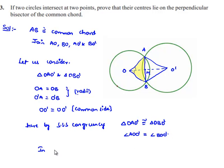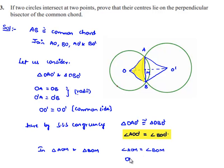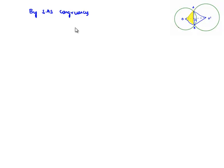Now let us consider another pair of triangles: triangle AOM and triangle BOM. In these two triangles, angle AOM is equal to angle BOM as proved above; OM is equal to OM since it is the common side; and OA is equal to OB since they are radii of the circle with centre O. Therefore, by the SAS property, triangle AOM is congruent to triangle BOM.